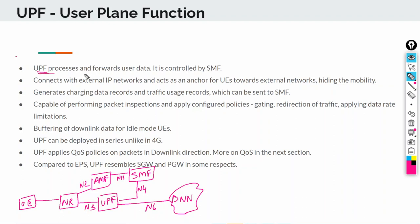The UPF processes and forwards all user data — it is controlled by the SMF. The SMF has an interface directly to the UPF and all the control signaling happens through this interface. The UPF connects to the external IP networks and acts as an anchor for the UE towards external networks, hiding the mobility. The UPF has a connection out to the data network via the N6 interface.